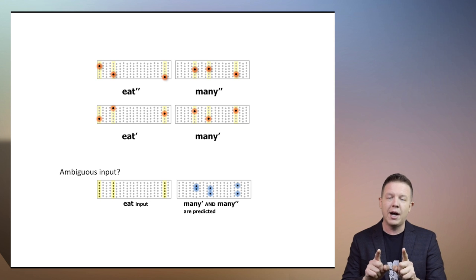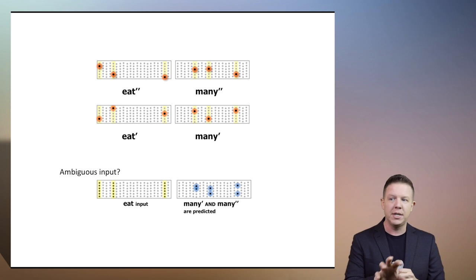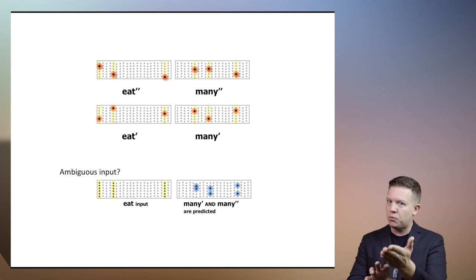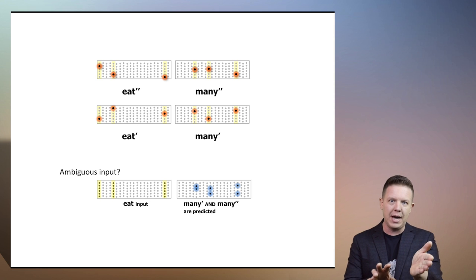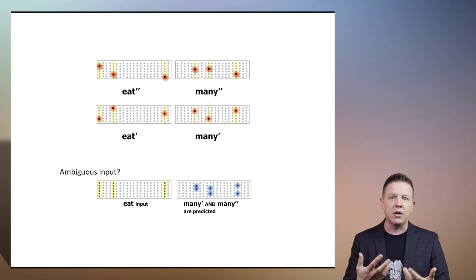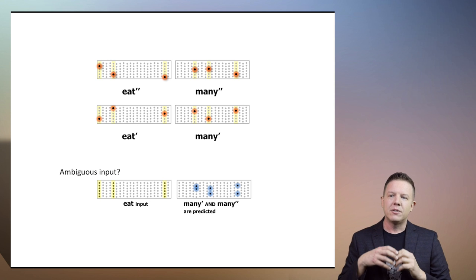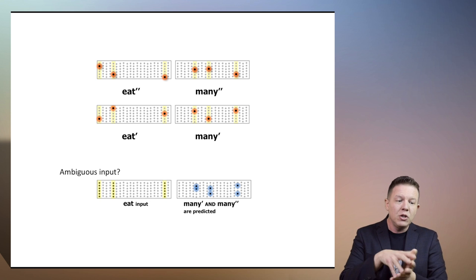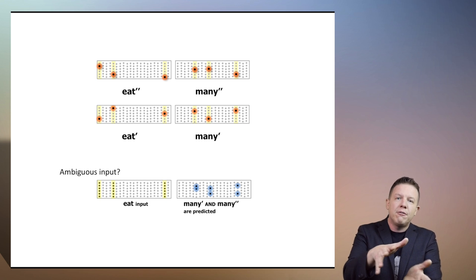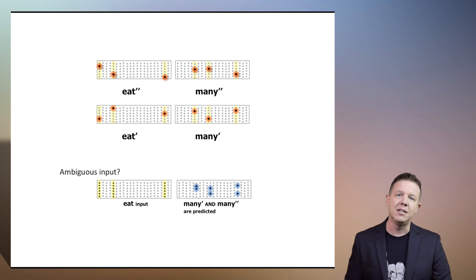But we do know the context that we have seen eat in in the past, so we might as well predict that it's going to be this one or it's going to be that one. So we have this set of predictive cells that is potentially looking at two different pathways that this sequence could take based on the two paths it's seen in the past.